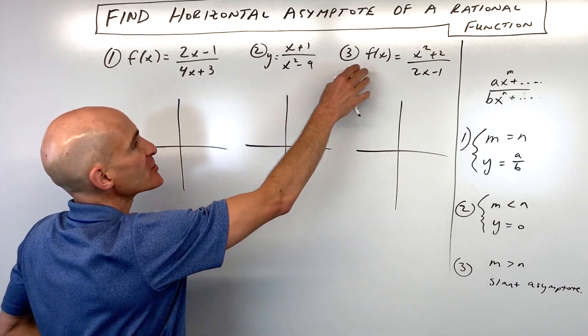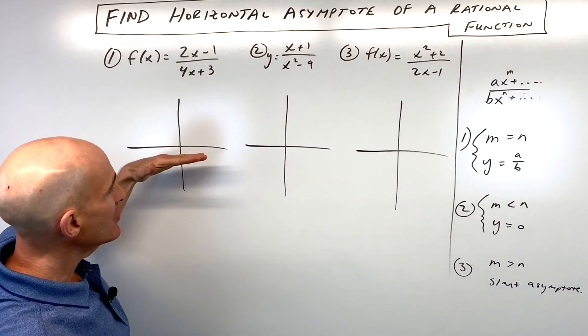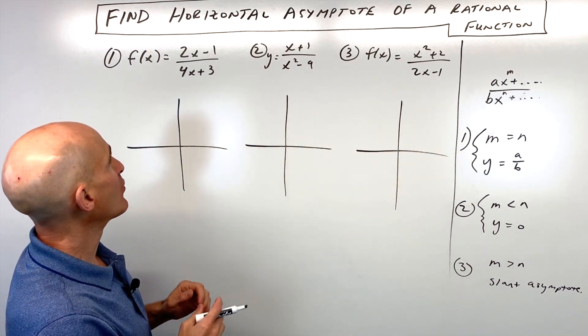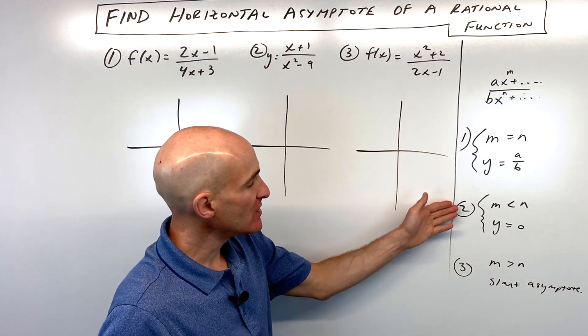So we're given these three rational functions and we want to find the equation of the horizontal asymptote. And what we want to do is we want to consider these three cases here.